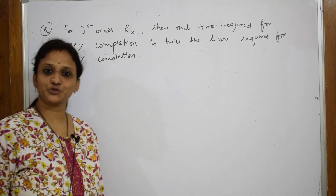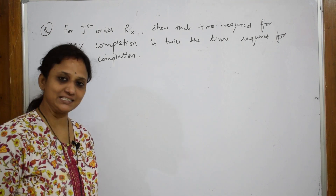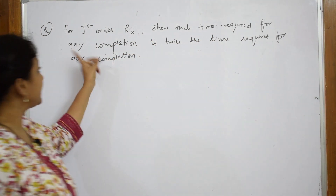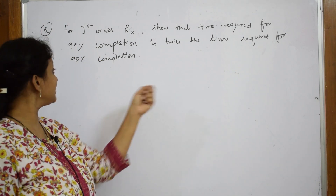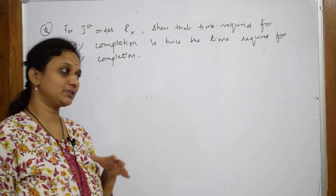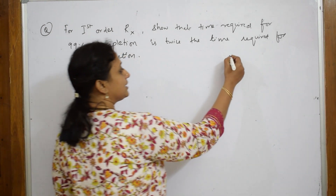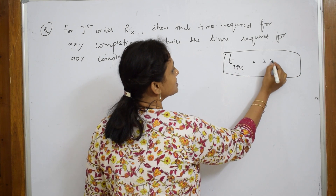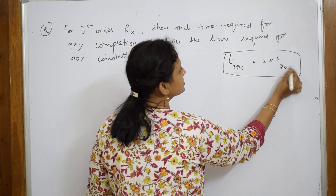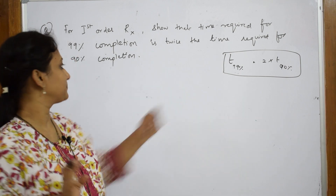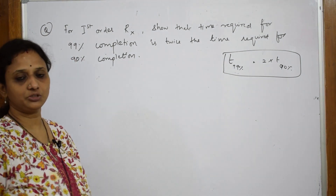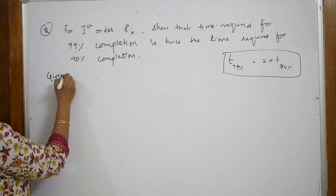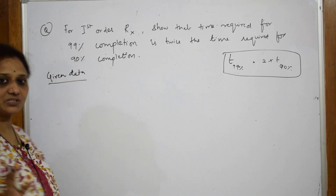Let us do one more numerical — this is a bit different but very easy. For a first order reaction, show that the time required for 99 percent completion is twice the time required for 90 percent completion. I have to show that t(99%) equals 2 × t(90%). Given data: just 99 percent and 90 percent completion.